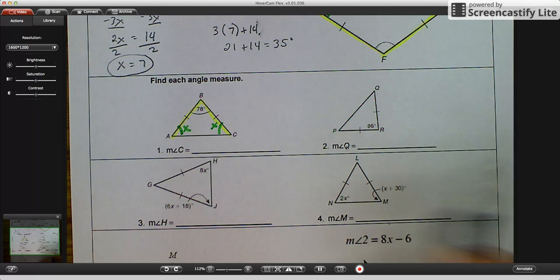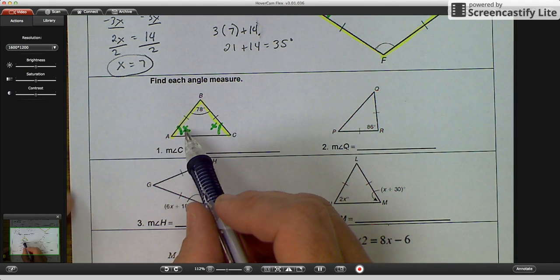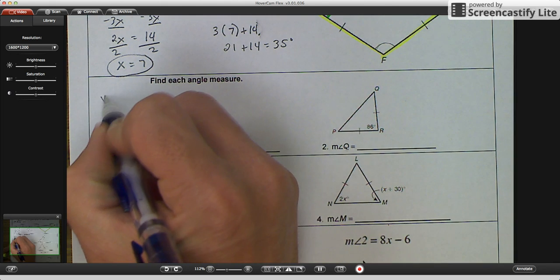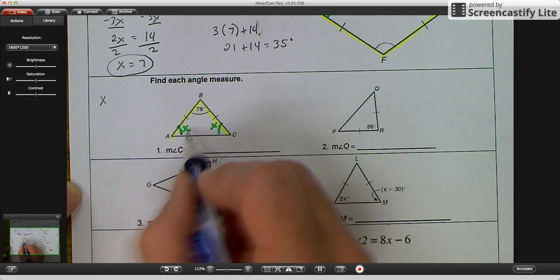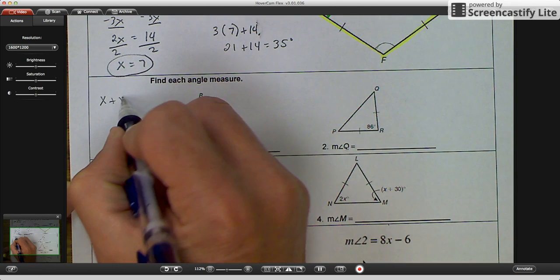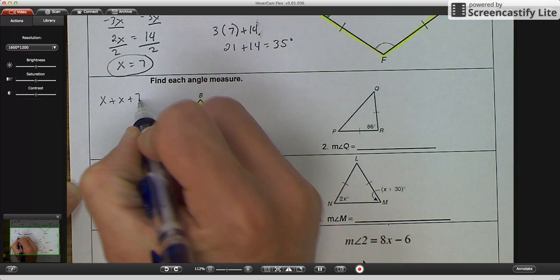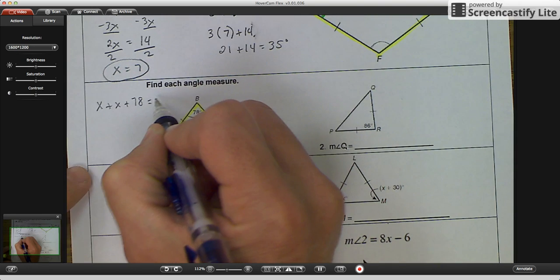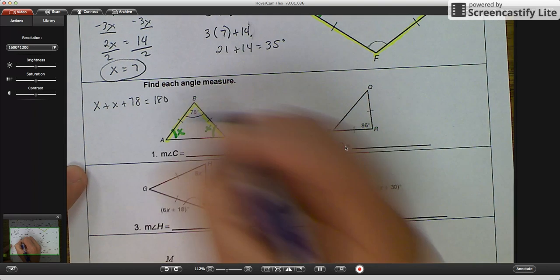So the equation that we're going to use to help us set up is we have our first angle and we'll go back to the triangle sum theorem. So X plus our other angle plus our third angle is equal to 180 degrees.